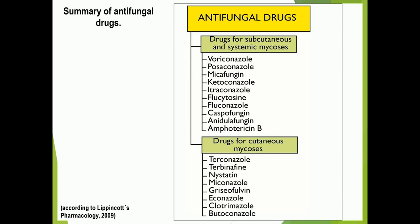While amphotericin B is also included. Another group is drugs for cutaneous mycosis, which include terconazole, terbinafine, nystatin, miconazole, griseofulvin, econazole, clotrimazole, and butoconazole. All these are antifungal agents used for a variety of infections, especially for subcutaneous and systemic mycosis or cutaneous mycosis.